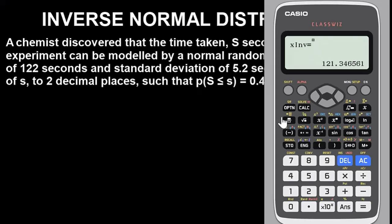Our inverse normal value is 121.34. Since we need it to two decimal places, it's 121.34. If you round it, this will give you 121.35, but just leave it as 121.34 and you'll be okay.